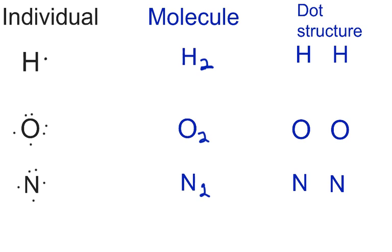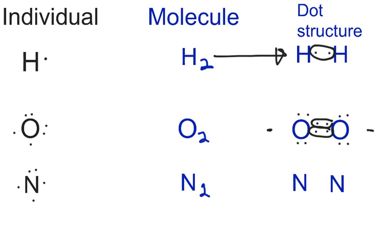When we move to a molecule, things get a bit different. We have H2, and we're going to draw the dot structure for the hydrogen molecule. Each hydrogen has one valence electron, so we'll just have a single bond. For oxygen with its six valence electrons, we put six on each side. Notice we don't have any dots on the bonding sides here, because when we're doing bonds we don't have to follow the two-per-side rule. So they simply link up, and it's going to be a double bond.